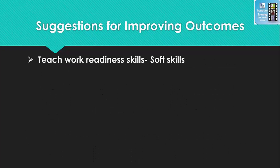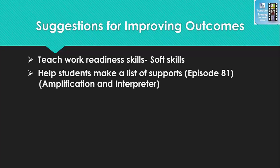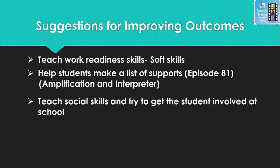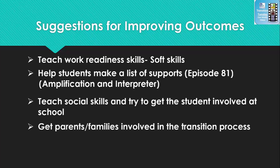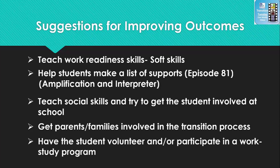Teach work readiness skills, particularly soft skills. Help students make a list of supports — information on how to help students do this is in Transition Tuesday Episode 81. For students who are deaf or hard of hearing, make sure you consider the amplification needed and if the student needs an interpreter. Teach social skills and try to get the student involved at school. Get parents and families involved in the transition process, and have the student volunteer and/or participate in a work-study program.